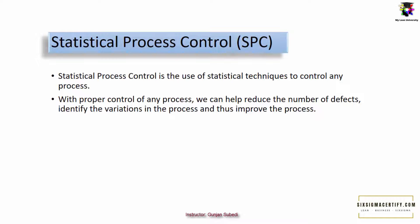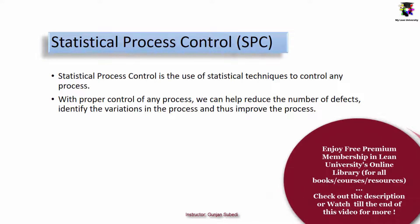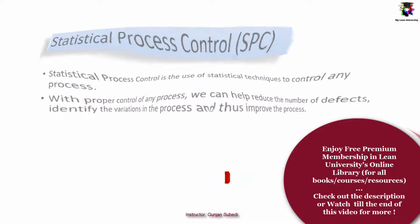Another term we have is statistical process control or SPC. To meet the highest level of process capability, we need to use statistical measures to monitor, analyze, control, and improve the process. Statistical process control is the use of statistical techniques to control any process. With proper control of every process, we can help reduce the number of defects, identify the variations in the process, and thus improve the process.